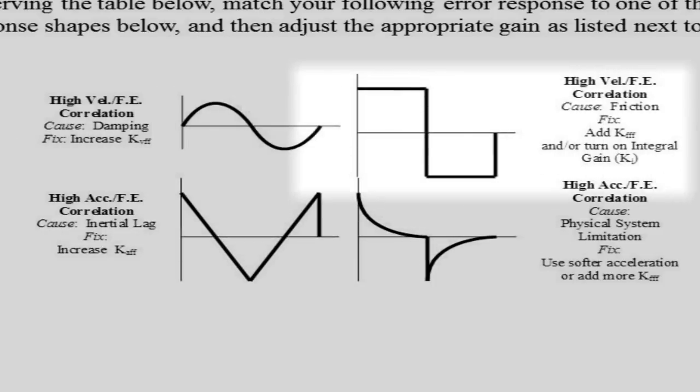The top right corner shows a square wave type shape in the following error with an initial flat spot, a drop, and another flat spot of the same magnitude but opposite sign. This is caused by friction. To compensate for this, add kFFF, which gives a slight boost to the motor to overcome this friction.